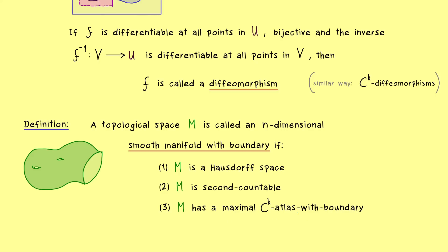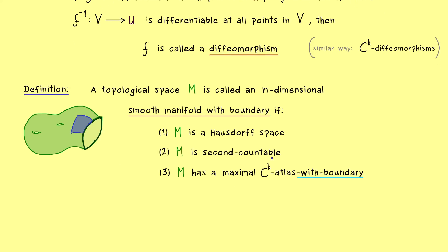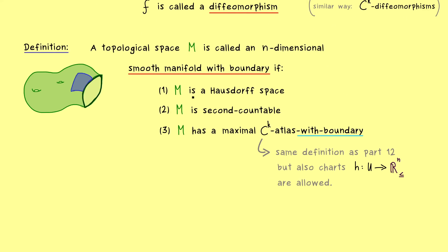And as we already know, the third ingredient for a smooth manifold is that we have a maximal Cᵏ atlas. And simply there, we can just change it to an atlas with boundary. In the picture, this just means that we also have charts in the atlas that contain the boundary of M. This means the definition of the maximal Cᵏ atlas is exactly the same as in part 12. The only thing we have to add is that also charts that map into the half-space are allowed. In fact, everything we have discussed in part 12 still holds; you just have to add that these charts are also possible. And now we know how to deal with that because we know what a Cᵏ diffeomorphism for the transition map is.